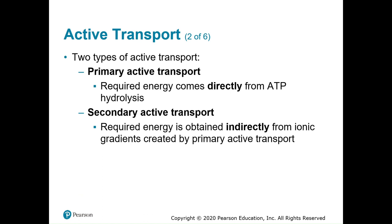There are two types of active transport: primary and secondary. Primary active transport requires ATP hydrolysis — recall that hydrolysis uses water as a reactant to break down a larger molecule into smaller ones. ATP is broken down into ADP and a free phosphate group, and the breaking of that bond makes energy. Secondary active transport obtains its energy indirectly from ionic gradients created by primary active transport.